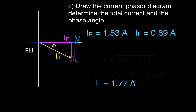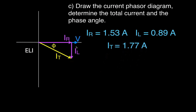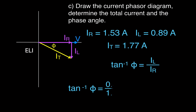Now we can get the phase angle. We know all three side lengths, so we could use sine, cosine, or tangent. Typically tangent is used because we have the two branch currents before we get the total current. Using SOH-CAH-TOA, the tangent of the angle equals opposite over adjacent — the inductive current over the resistive current. Plugging in the values, we get that the angle is approximately 30 degrees.